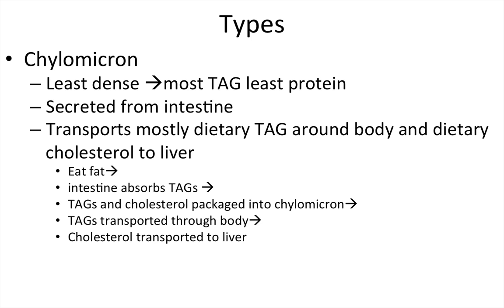A chylomicron's job is to move dietary TAGs and dietary cholesterol around the body. You eat food that has fat in it, the intestine absorbs the TAG, the TAG and cholesterol are packaged into a chylomicron, the chylomicron is transported through the body, TAGs are delivered to different spots, and cholesterol is transported to the liver.